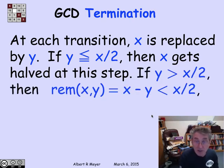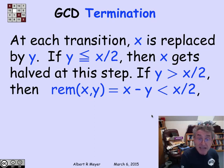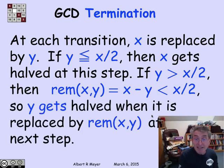What about if y is big? If y is bigger than x over 2, then the remainder of x divided by y is simply x minus y, and it's going to be less than x over 2. But that's going to be the value of y after the next step. So y is going to be halved either at this step or the next step when it's replaced by the remainder of x and y.